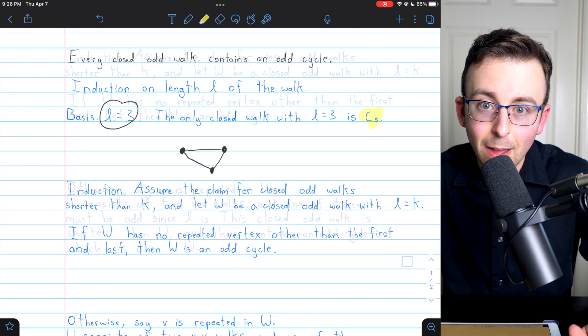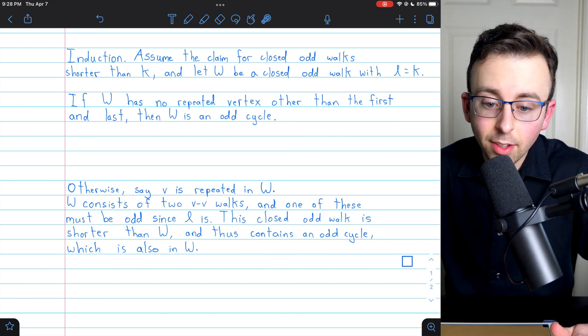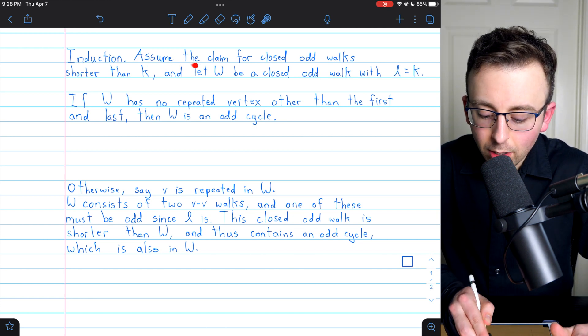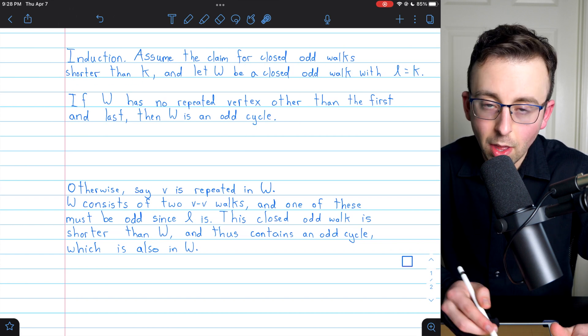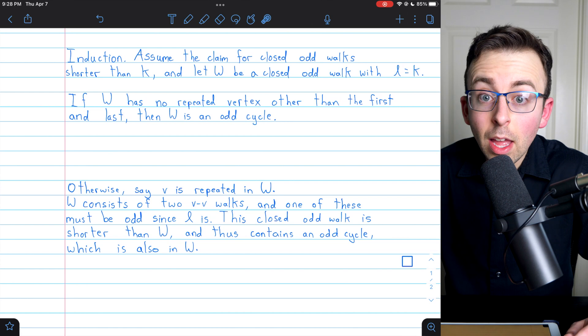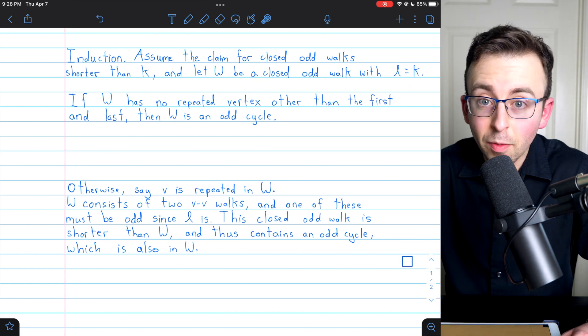So that's the basis step. Here is our induction step, which begins with our induction hypothesis. We assume that our claim is true for closed odd walks shorter than, let's say, K. Then we'll let W be a closed odd walk with a length of K.